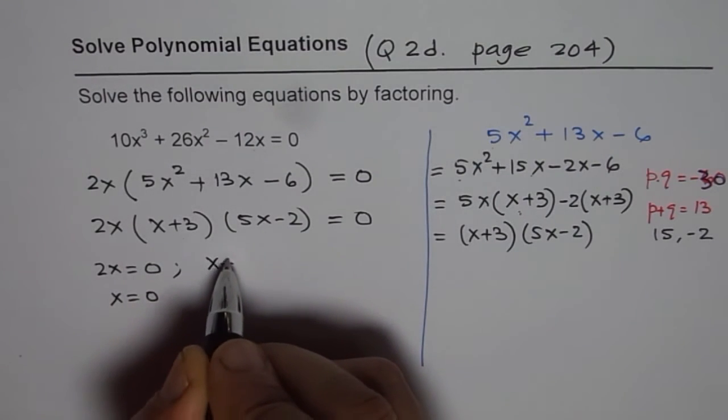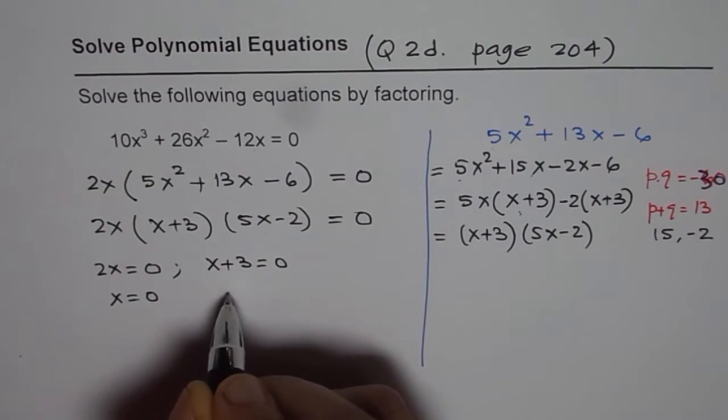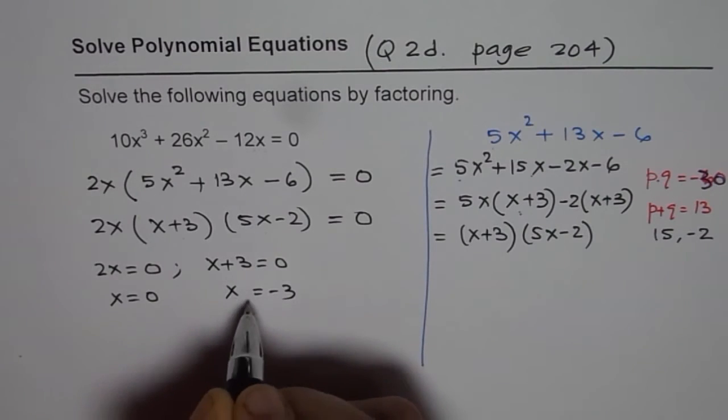The second is, when x plus 3 equals to 0, that gives us x equals to minus 3 as the value.